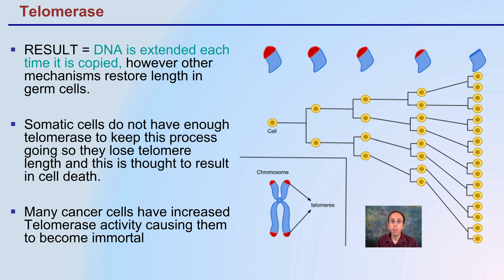However, many cancer cells have actually found ways or have mechanisms to increase the length of this telomerase activity, causing them to become immortal. Because if we slowly reduce the telomere length of the chromosome and that cell ends up dying, cancer cells simply increase the length — kind of putting a permanent cap over it to keep its length consistent — and therefore they can become immortal because they won't go through this natural death process.